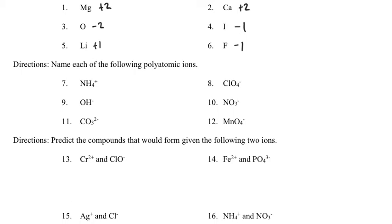The second section requires your ion sheet, which is under the resources part of Google Classroom — I'll probably give you a hard copy next week. What you need to do is find the name of the ion and write it down. NH4 with a plus one charge is the ammonium ion. OH with a negative one charge is the hydroxide ion. You can find the rest of those on the ion sheet.